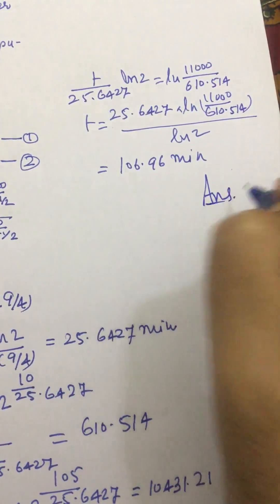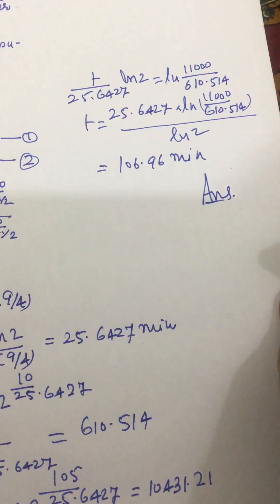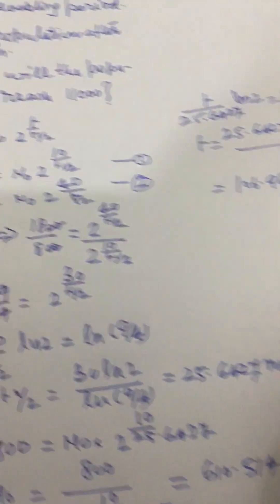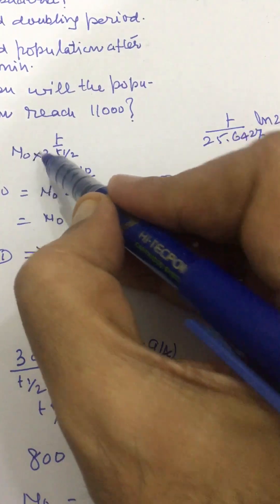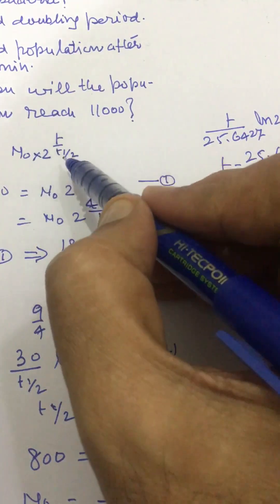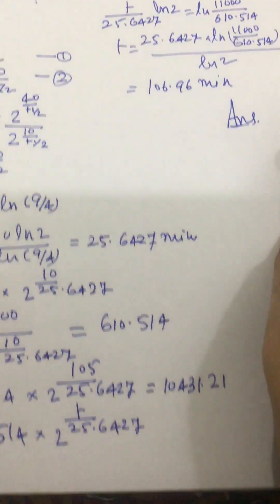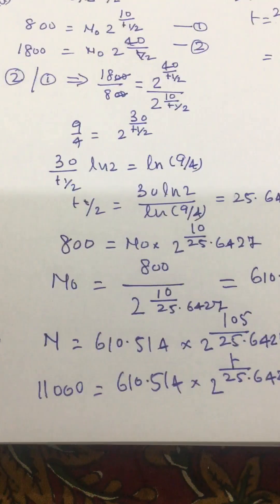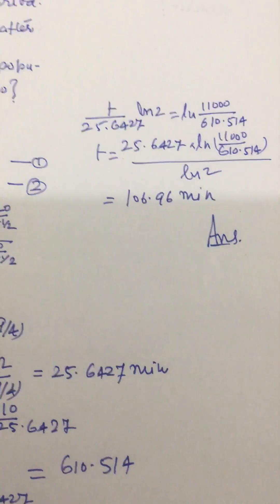So this is our answer. We can solve this problem in this way. The only thing we have to assume is the equation n equal to n₀ times 2 raised to the power t divided by t-half. This is quite easy and quite simple to understand. Dear friends, kindly subscribe to my channel. Thank you very much.